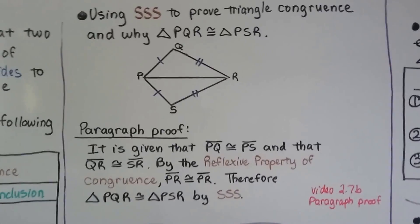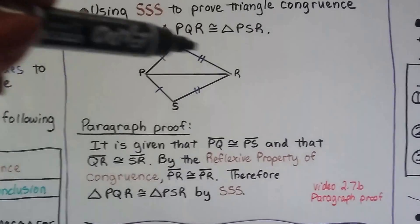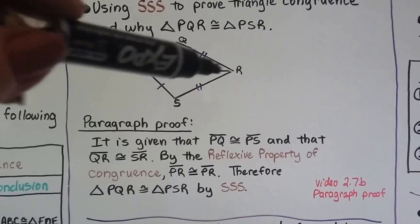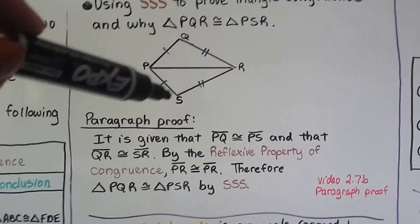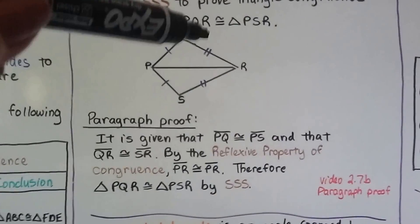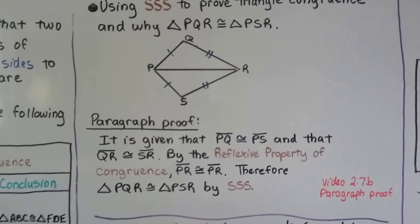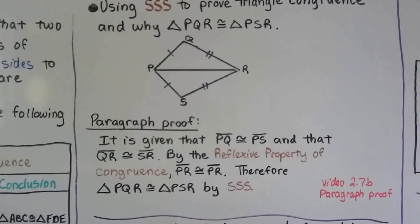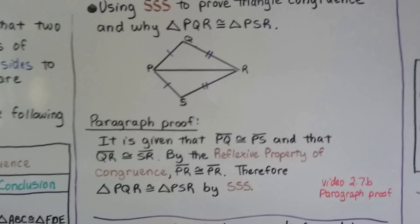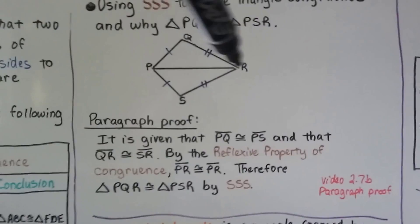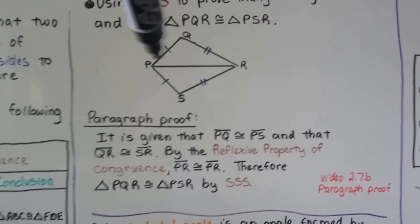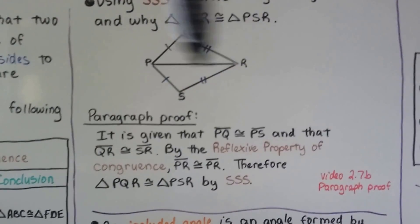And that QR is congruent to SR — we can see the congruent marks. And by the reflexive property of congruence, PR is congruent to PR.